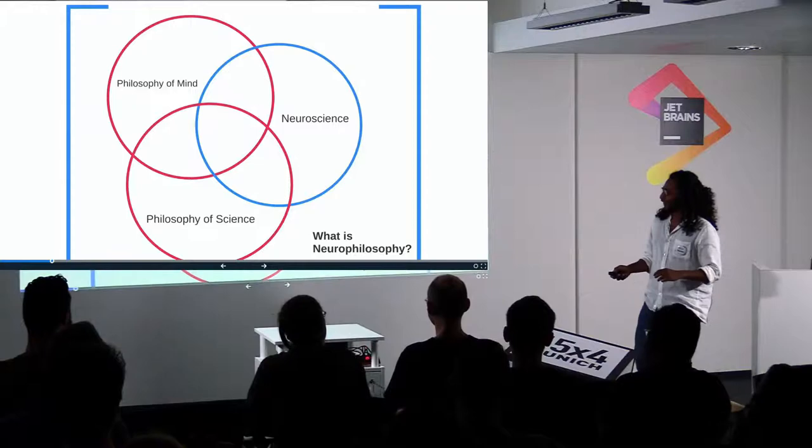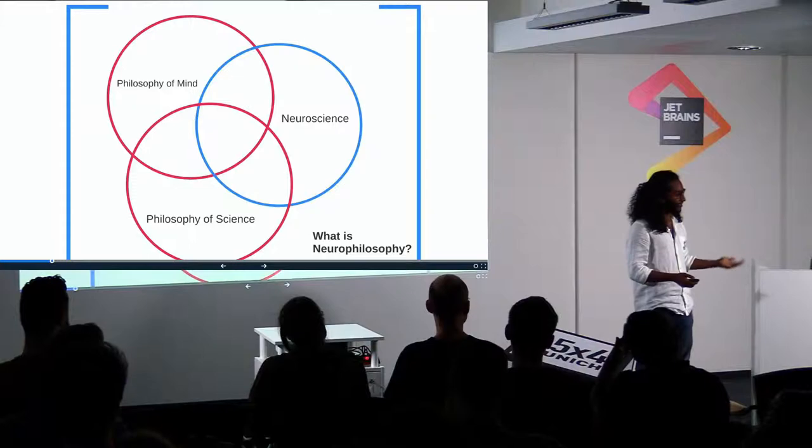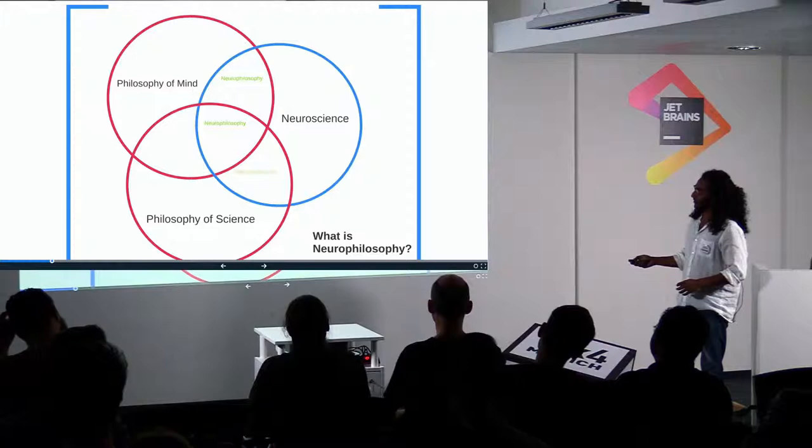Philosophy of science is asking questions about how science works. What is the scientific method? How do you define the scientific method? What is evidence? What is a hypothesis? How do you test the hypothesis? How do you make advancements in science? So when you have a Venn diagram of these three, the intersection of them is what I would like to call neurophilosophy.